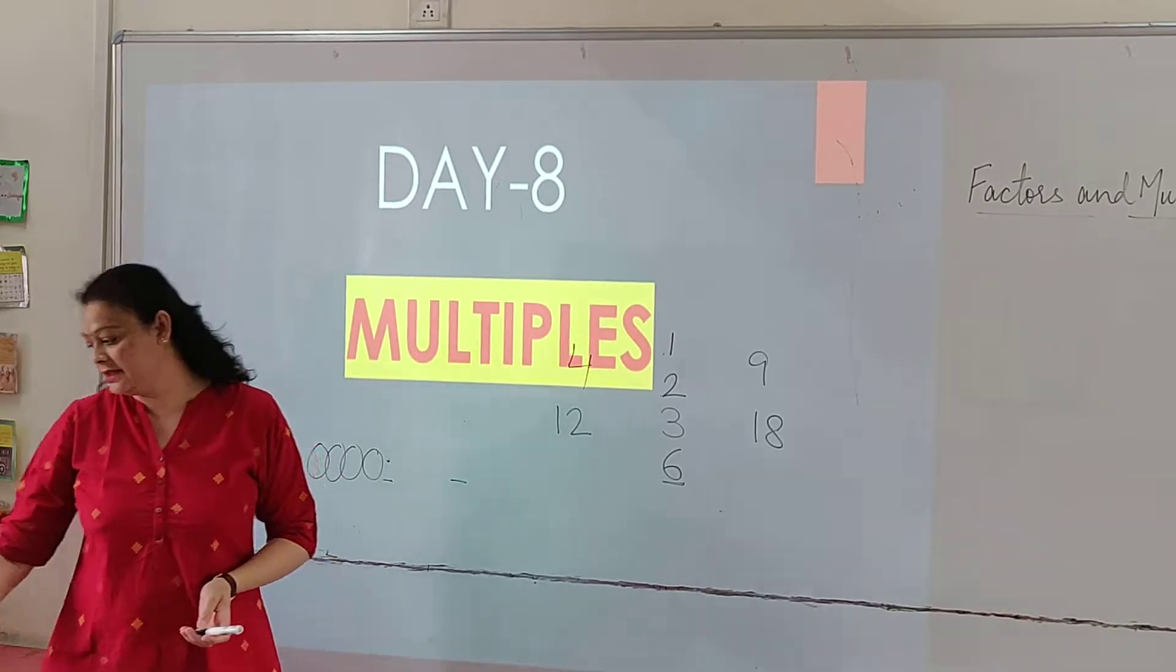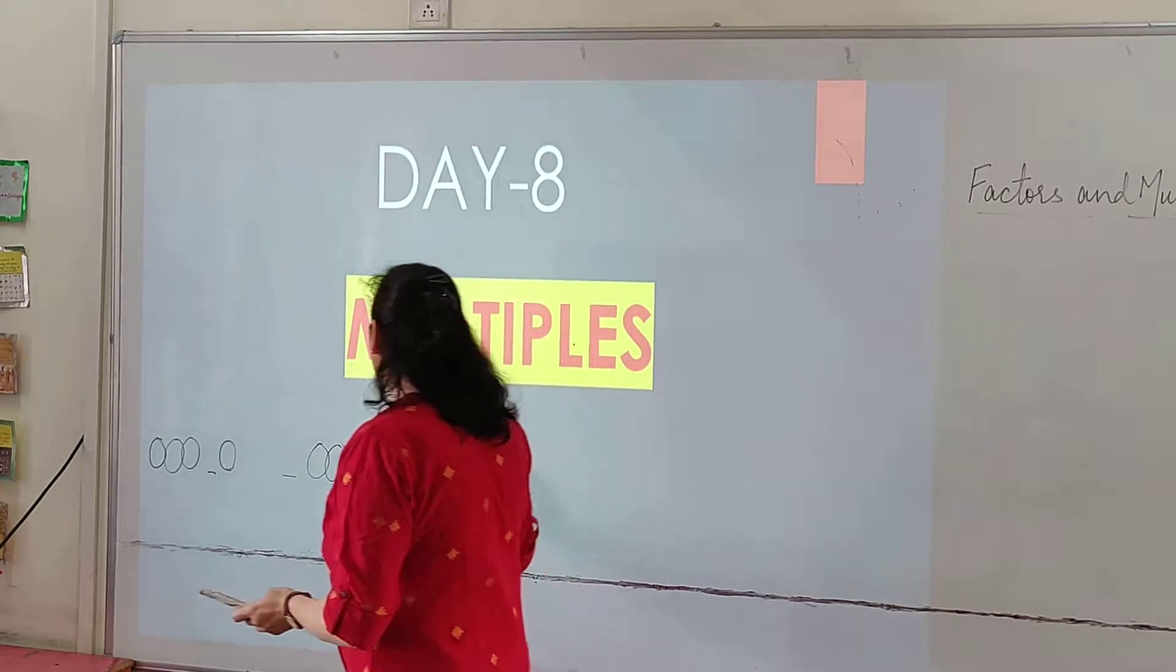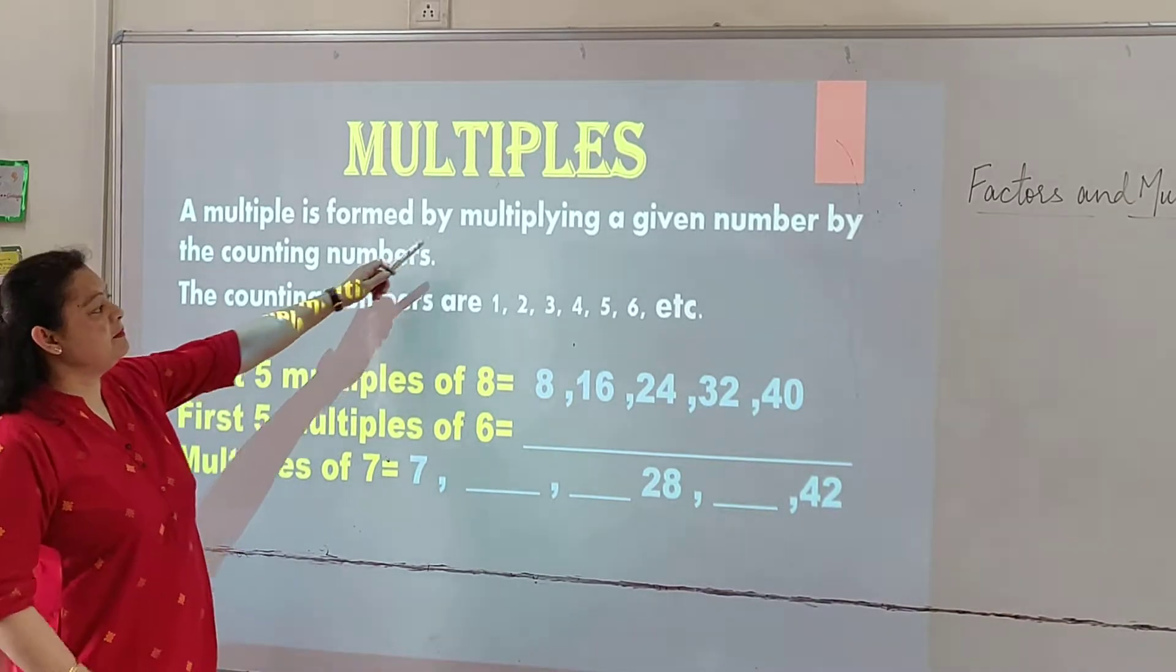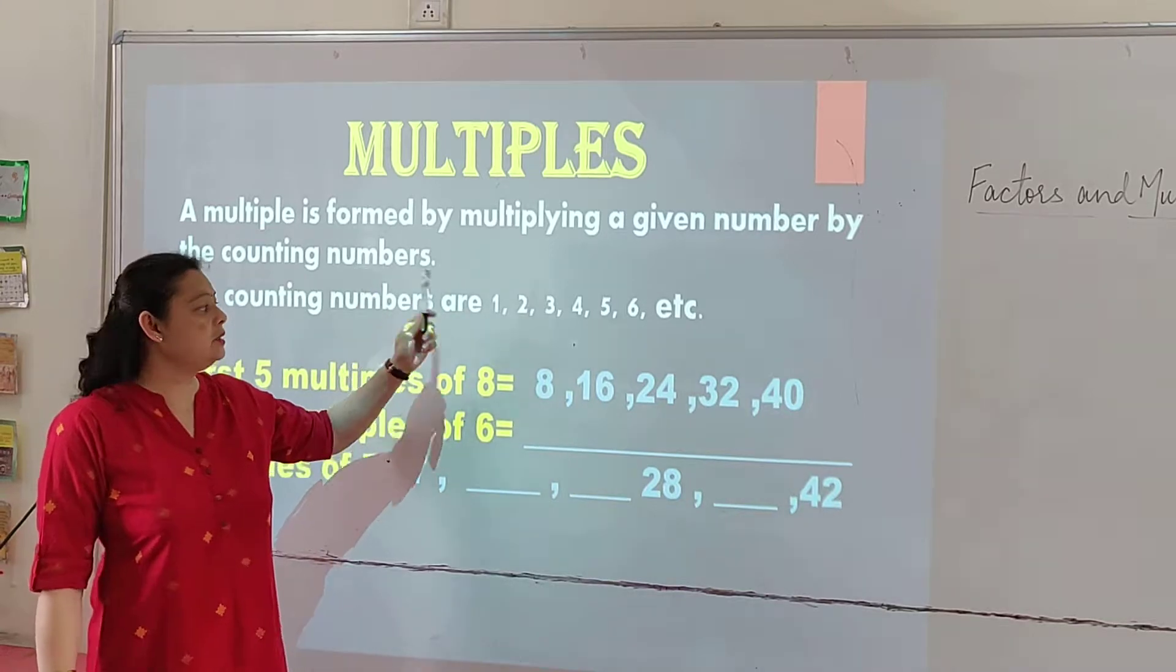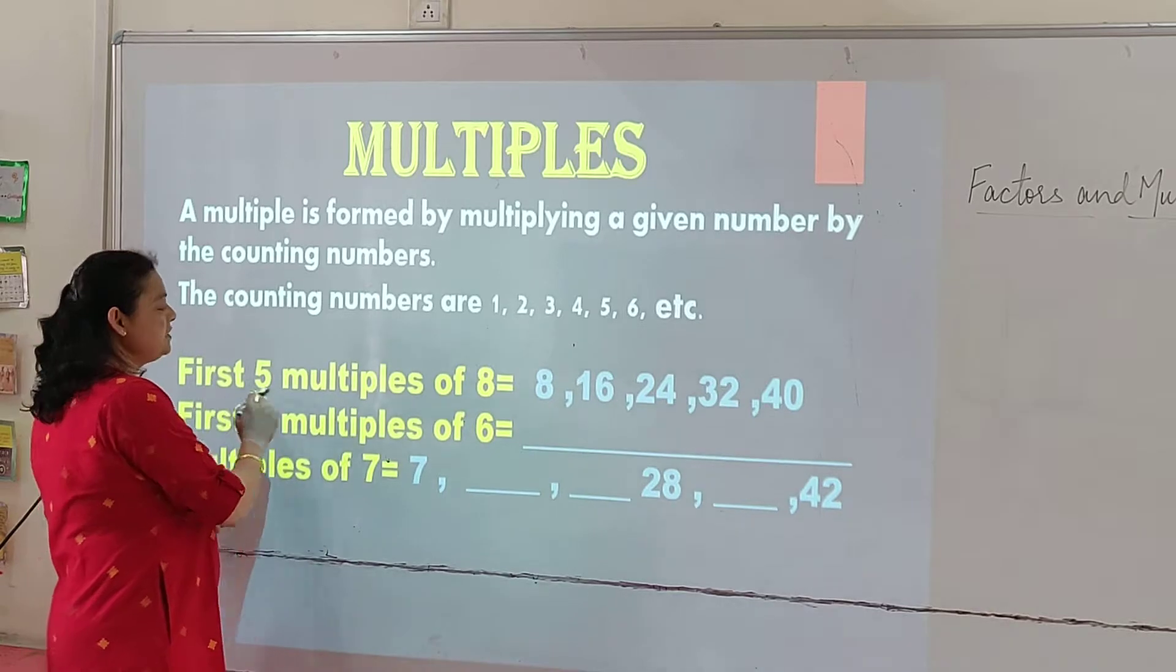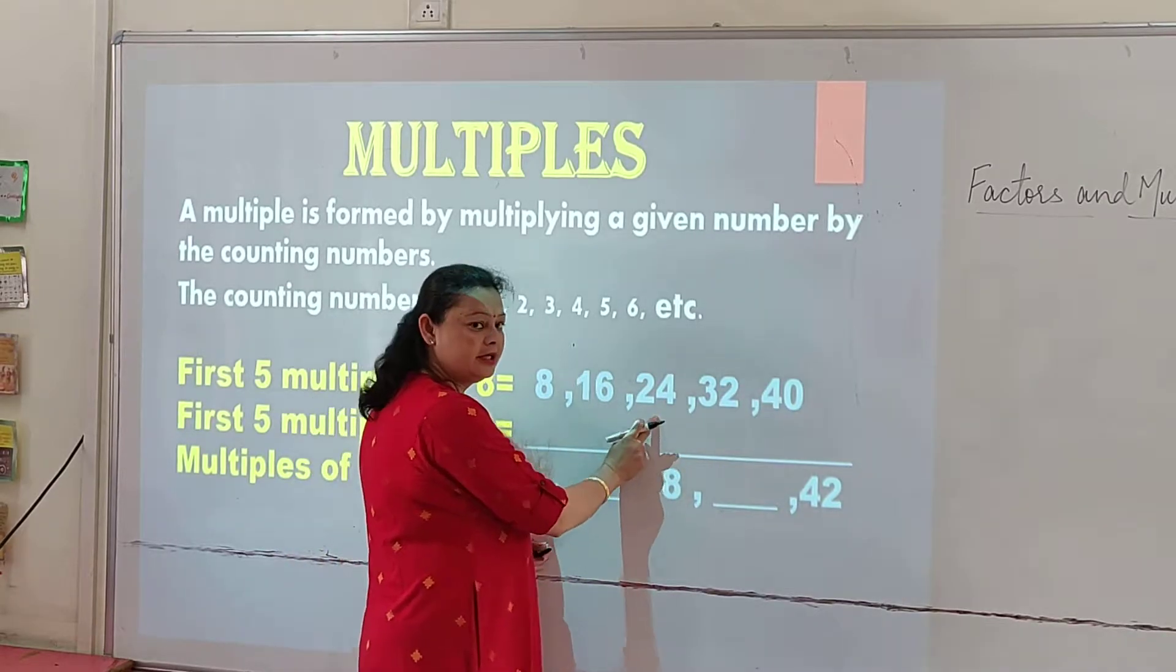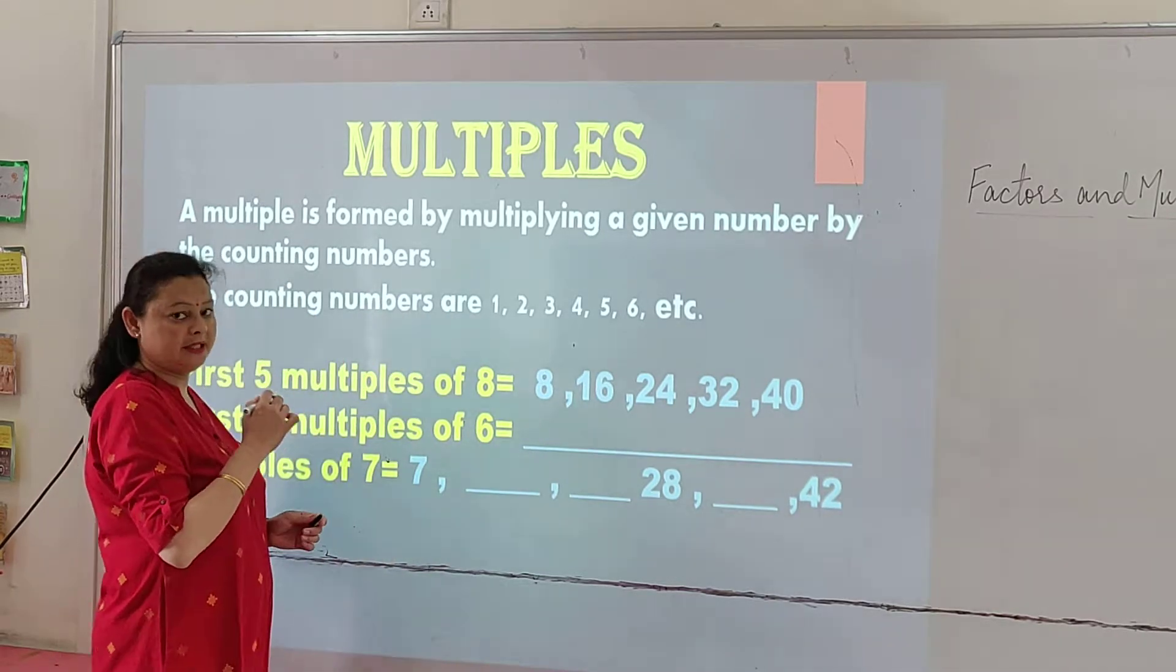Day 8, multiples. Now we will learn about multiples. Multiple is formed by multiplying a given number by the counting numbers. Counting numbers are 1, 2, 3, 4, 5, 6, and so on. First 5 multiples of 8: 8 times 1 is 8, 8 times 2 is 16, 8 times 3 is 24, 8 times 4 is 32, 8 times 5 is 40. This way we write the multiples by the help of the multiplication table.